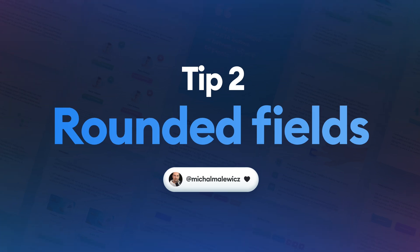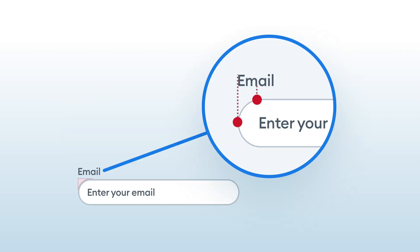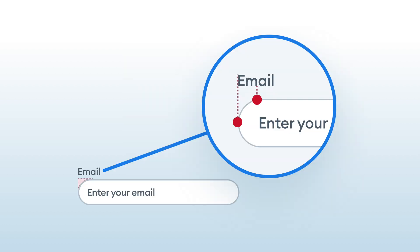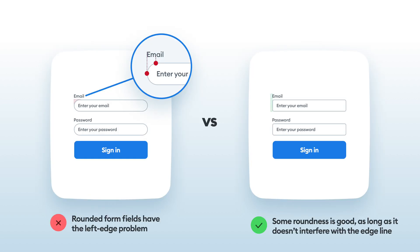Tip number two. Fully rounded or pill-shaped fields have a certain label alignment issue. While it can be okay for short two-field forms, the longer the form, the harder it is to actually follow it along the left edge. That is because the left edge is optically in two places at once — where the field begins and where the roundness ends. That causes our eyes to shift left and right constantly. Whenever you can, use slightly rounded or sharp corners in text fields. Especially in longer forms, it will make scanning the inputs along the left edge a lot smoother.